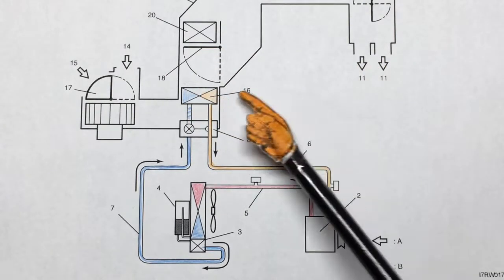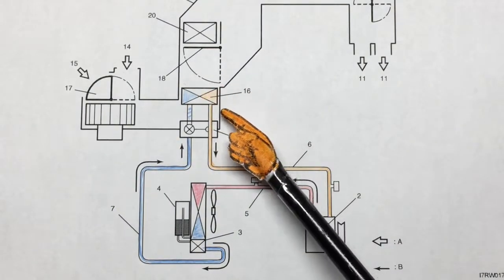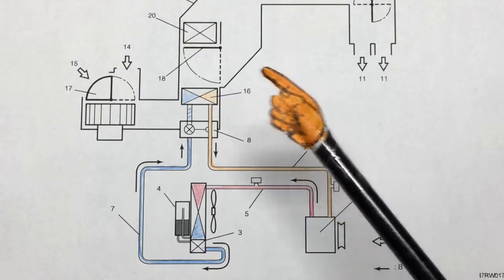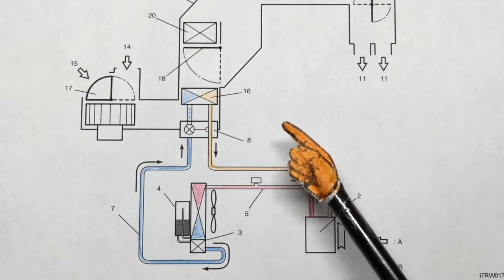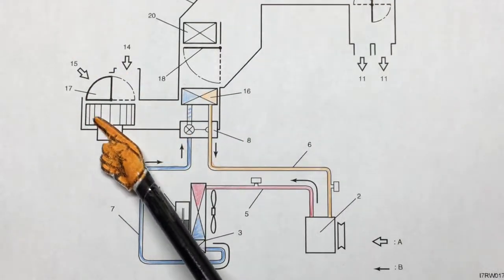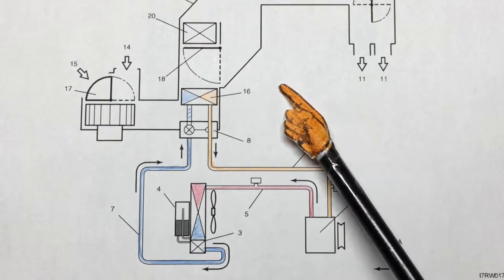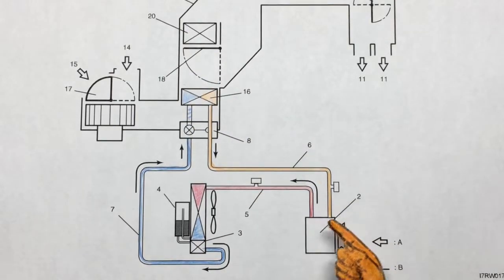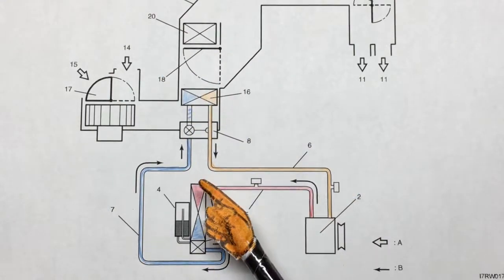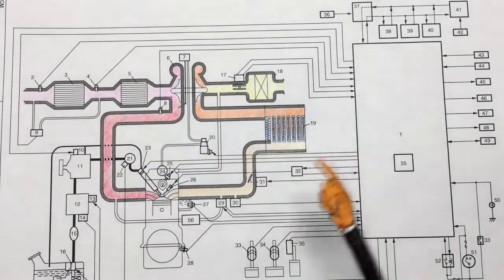Not surprisingly, inside the evaporator, latent heat of evaporation says that anytime we evaporate something, we can actually absorb a great deal of heat energy. What heat energy? The heat energy that is going through the plenum, forced through by the blower, and we can actually cool the interior of the car. Then of course the refrigerant makes its way back to the compressor and the whole system actually repeats itself - the vapor cycle.